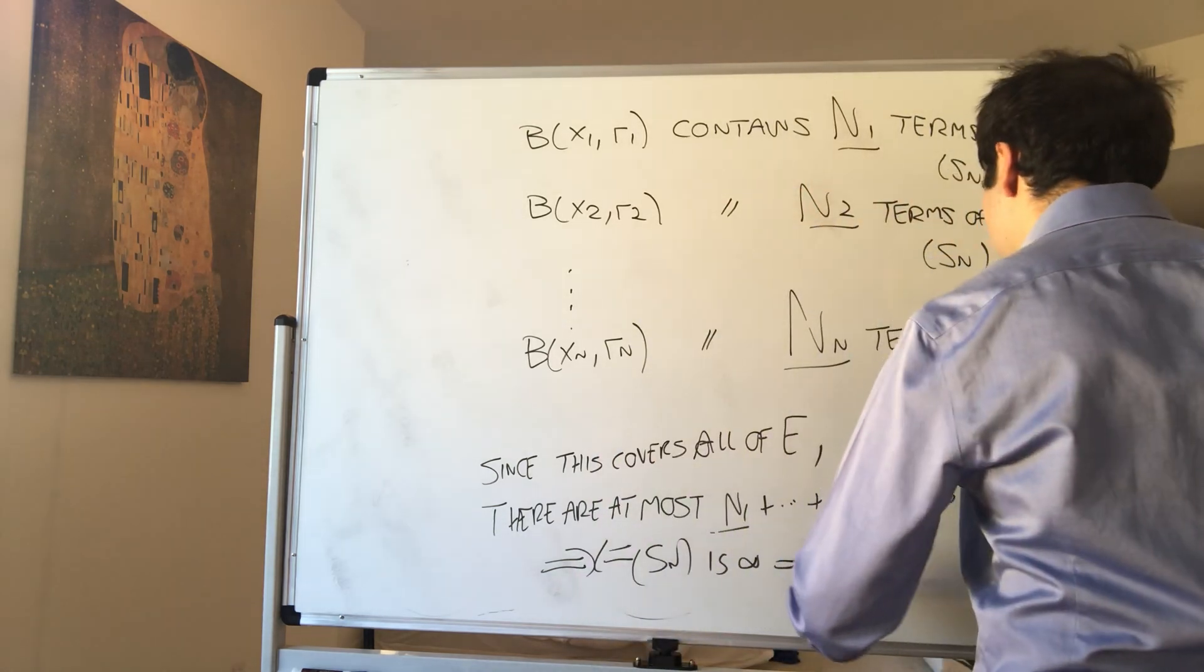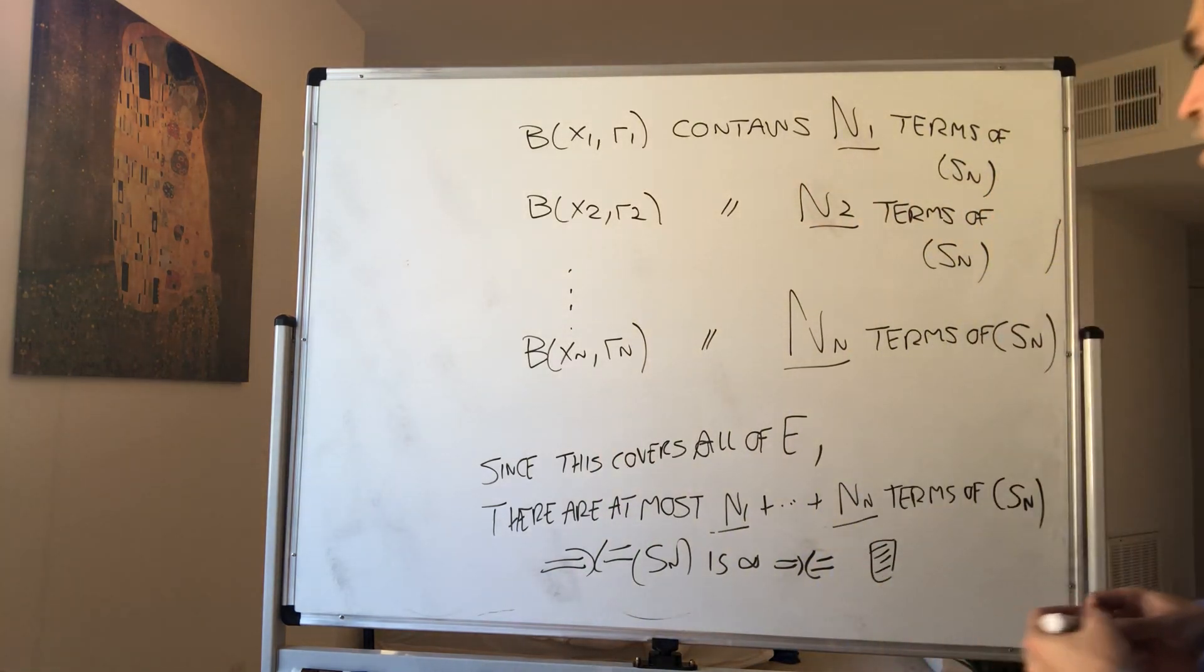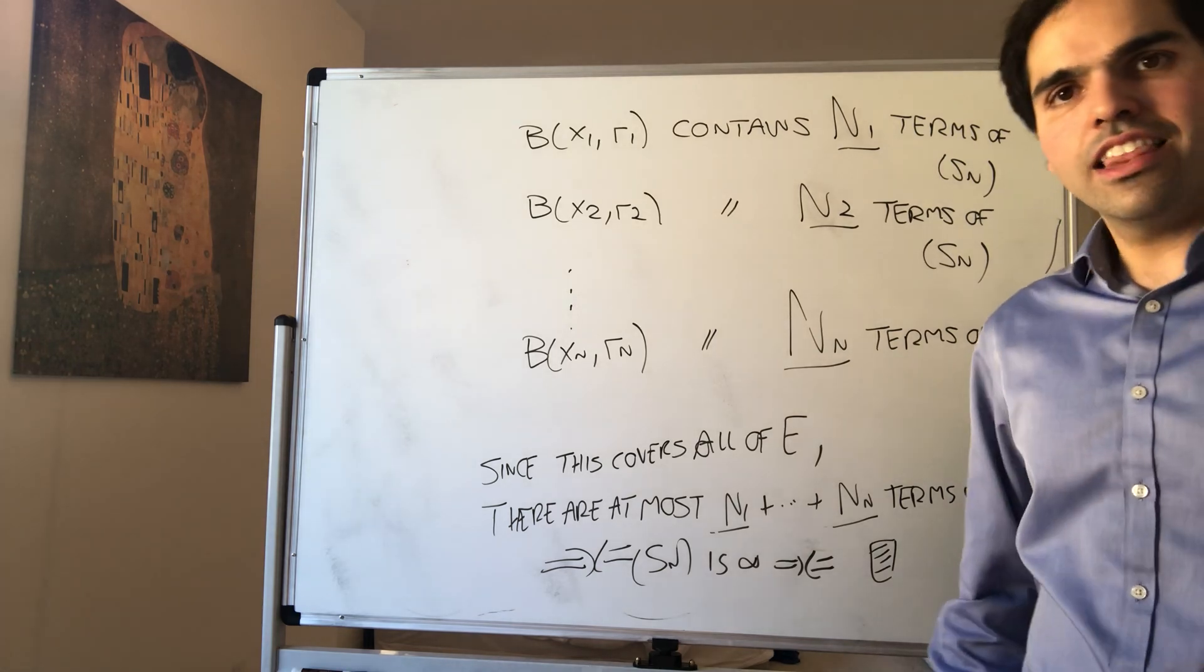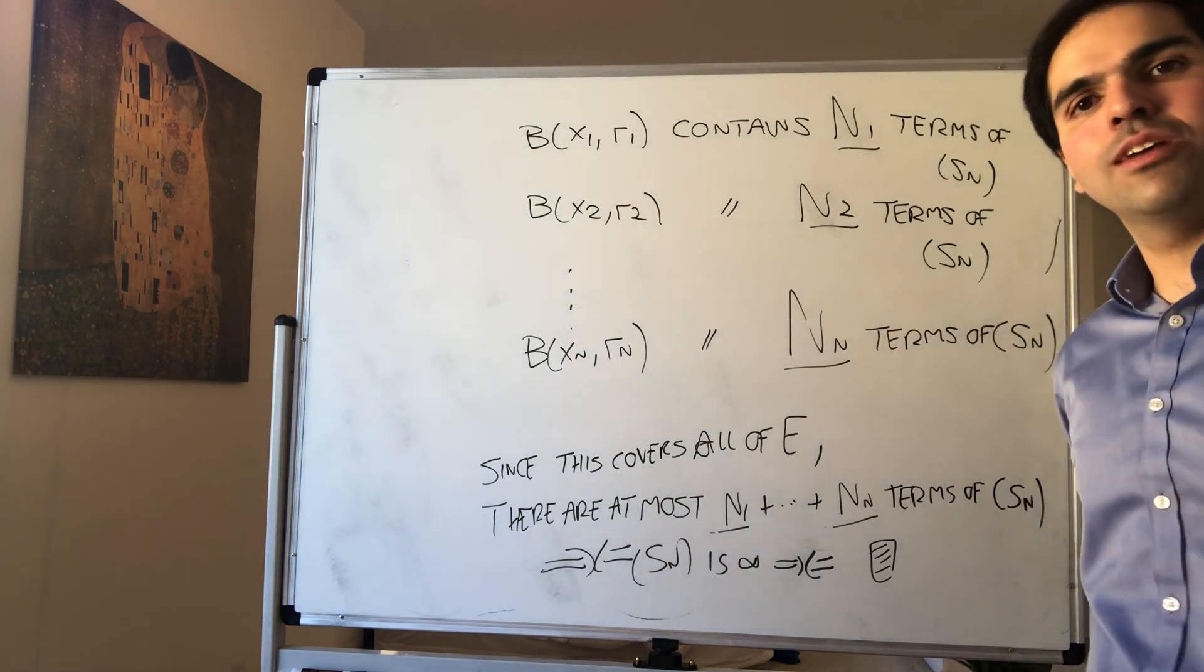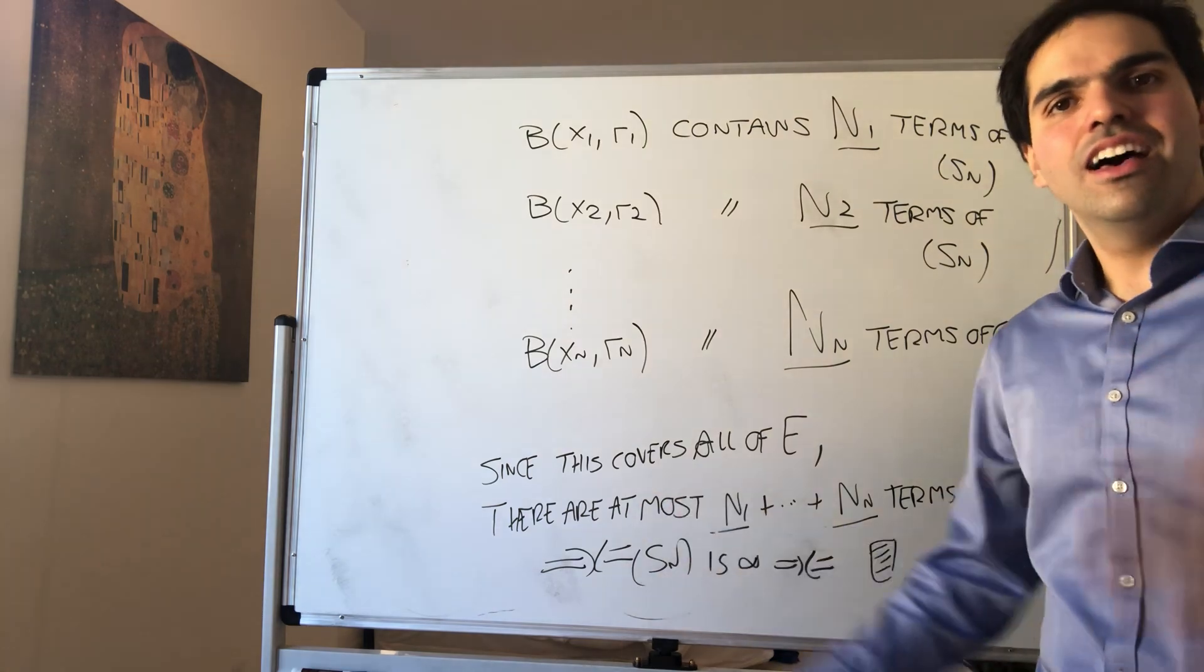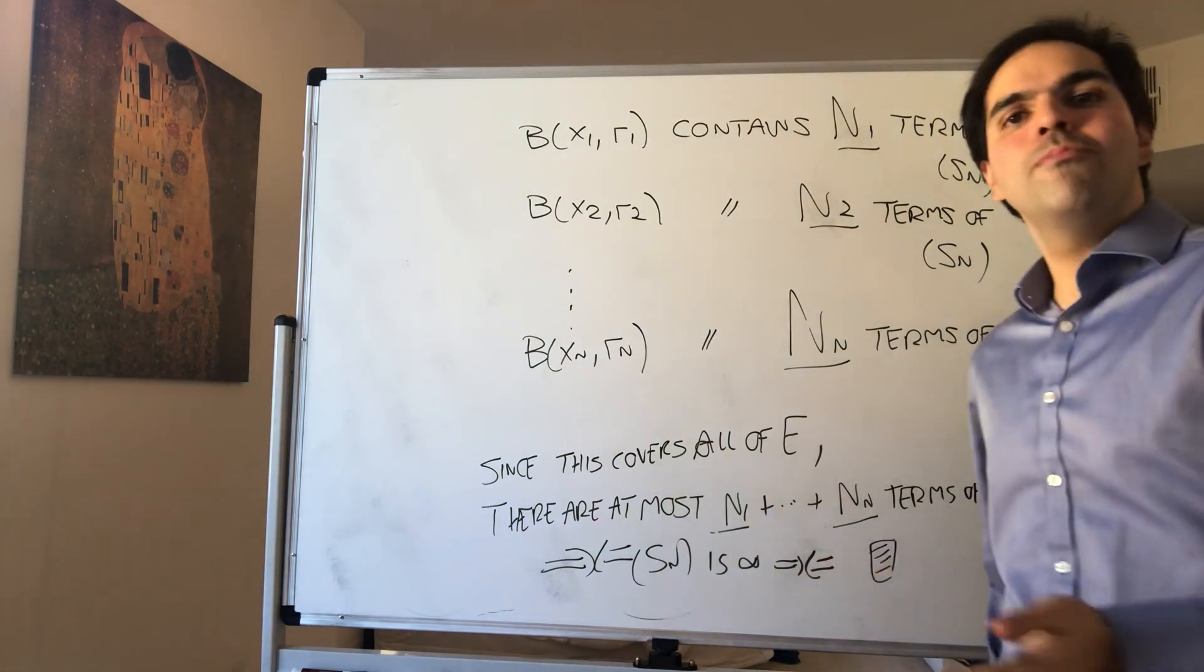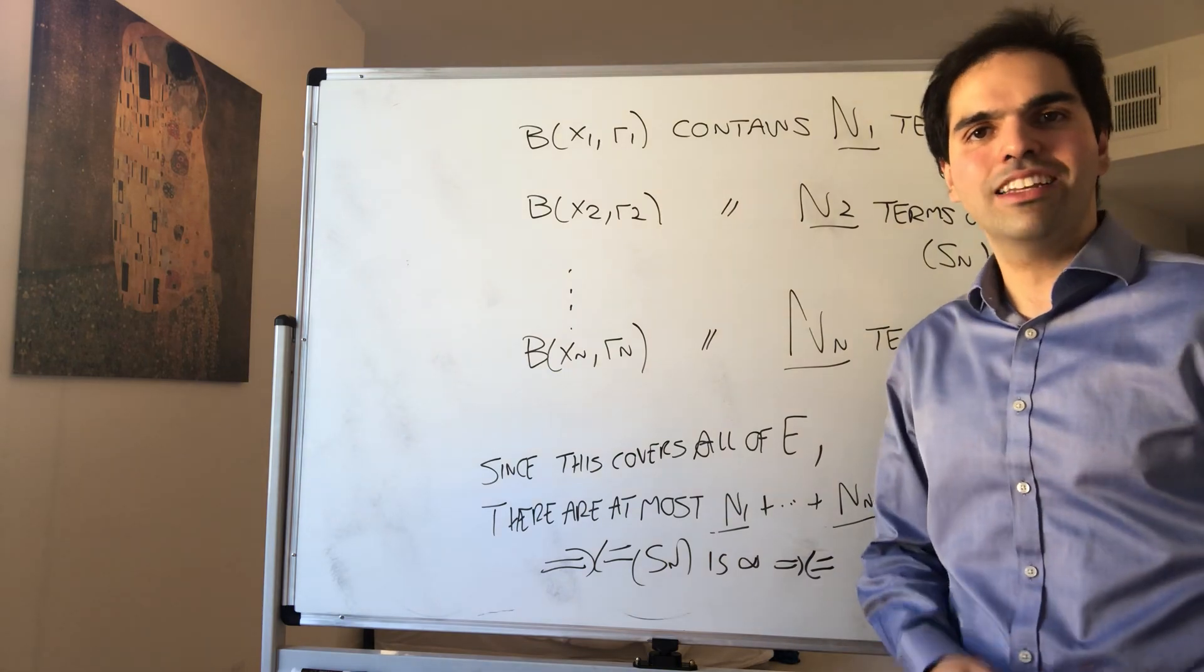And therefore, contradiction with what? Contradiction with the fact that Sn does not have a convergent subsequence, therefore Sn has a convergent subsequence and the set is sequentially compact.